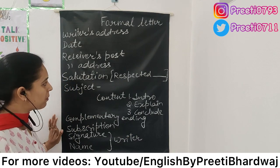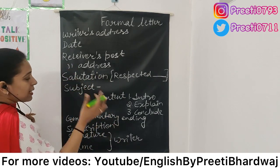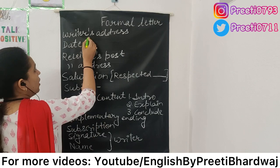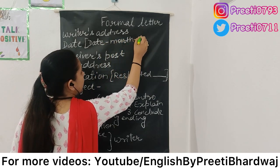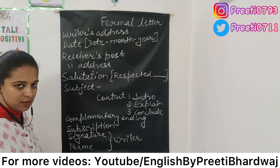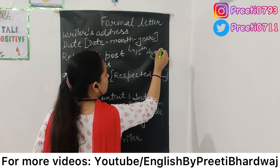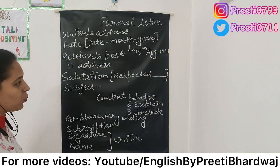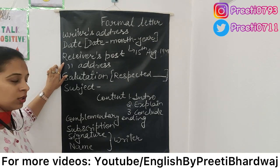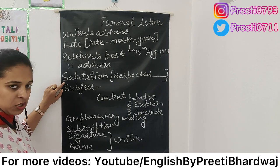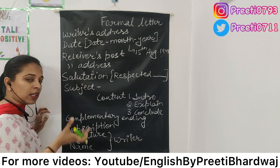Let us have a quick revision of the format of formal letter writing. It will begin with the writer's address. Then we leave a line and write the date — as I have mentioned before, the date format is: date first, then month, then year, for example '15th August 1947'. After the date we leave a line and write the receiver's post — for example, 'The Editor' or 'The Manager' — then the receiver's address. Between the post and the address of the receiver there is no need to leave a line, but after the address we leave a line and write the salutation.